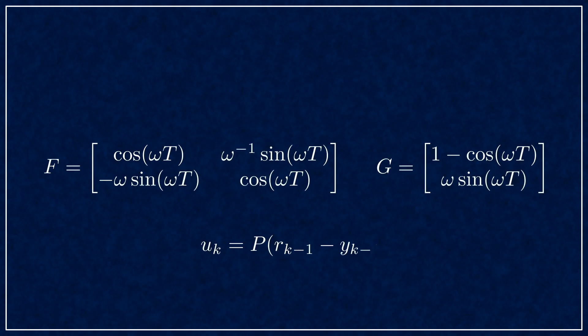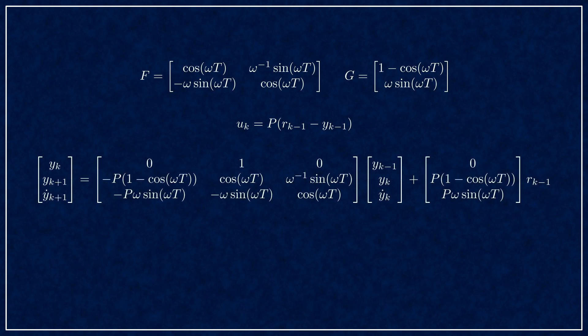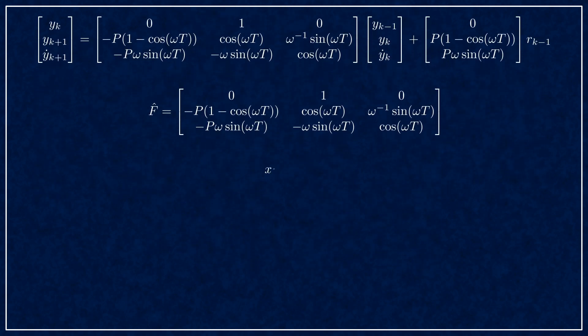Moving on, let's close that control loop. Here we have our state matrices for the plant, and the control null with the delay. They can be combined into a matrix equation like so, and this gives you the state transition matrix for the closed loop system f-hat.